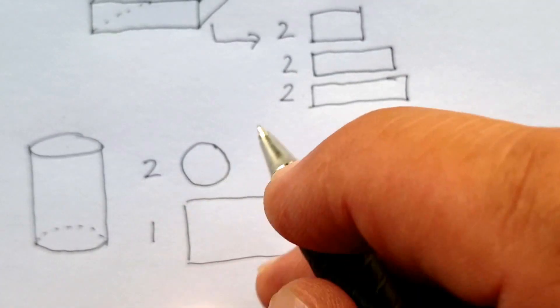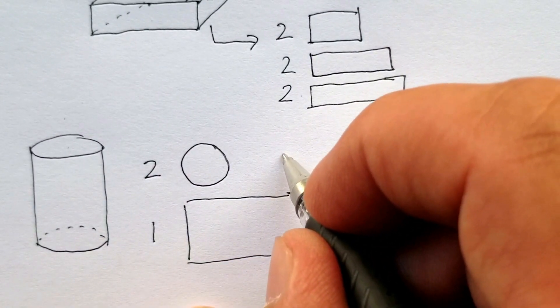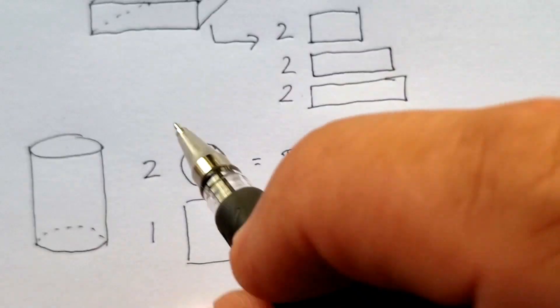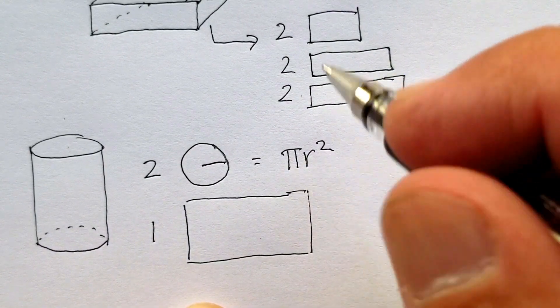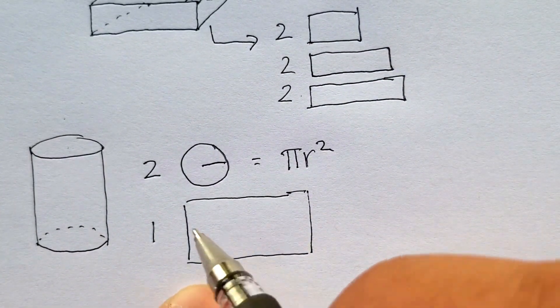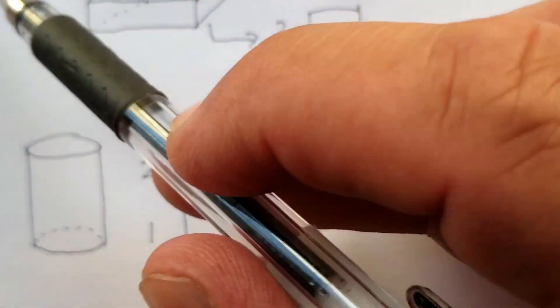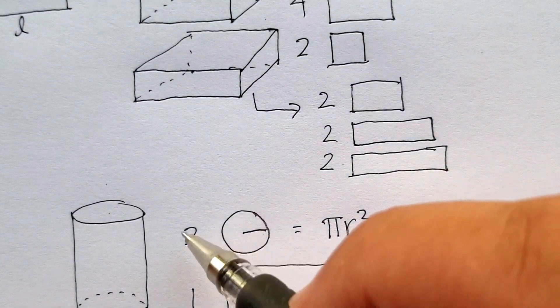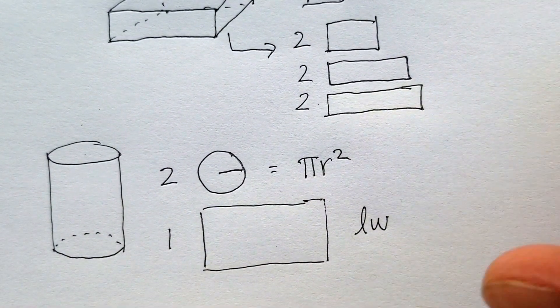You would find the area of a circle, which is πr². Find the radius there, and then multiply by πr² for each circle. And then find the area of this particular rectangle, which is the cylindrical body. We know that's just length times width. Add all three of those components together and you would find the area of a cylinder.